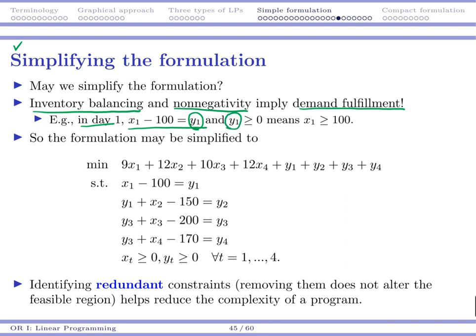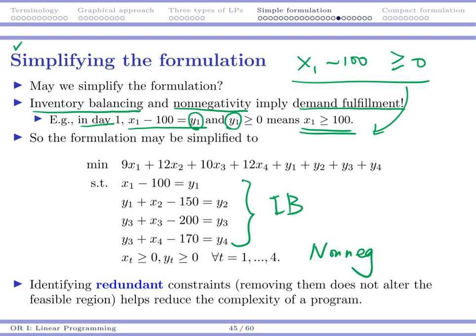It also tells you that y_1 must be non-negative, right? The ending inventory amount must be non-negative. So if that's the case, directly it says x_1 minus 100 must be non-negative. And that just means demand fulfillment. And if you take a look at each day, that's the same thing. As long as your ending inventory is non-negative, then you fulfill all the demands. So actually, you only need inventory balancing and non-negativity constraints. You don't really need those demand fulfillment constraints. It's fine to conclude that they are redundant.